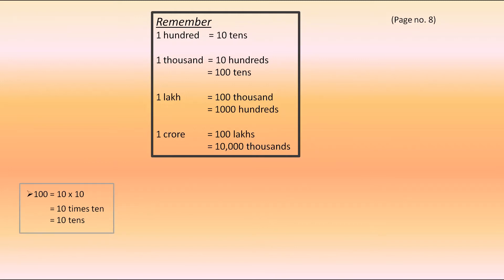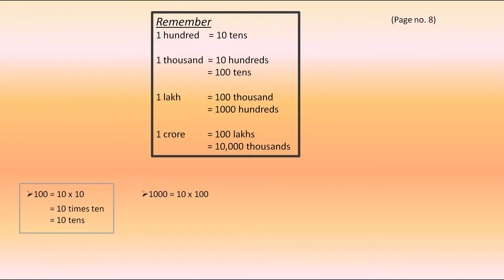The next point says: 1000 is equal to 10 hundreds, which is equal to 100 tens. Let's see how this is possible. 1000 can be written as 10 into 100. This means 1000 is 10 times 100, so it can be written as 10 hundreds. They have also told that 1000 is equal to 100 tens.